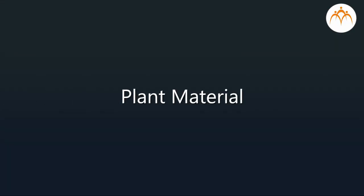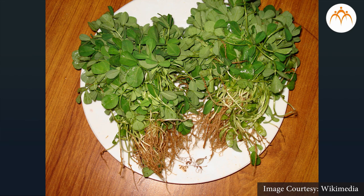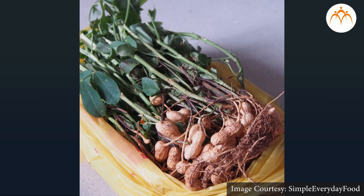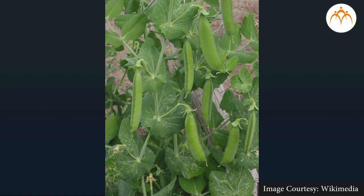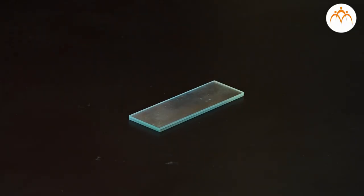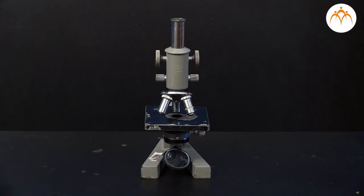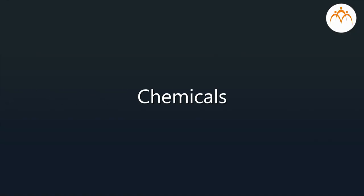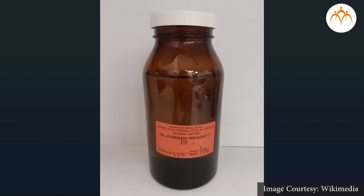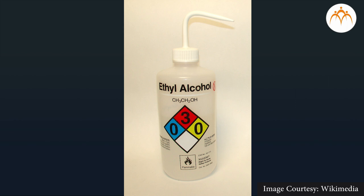AIM: Study of bacteria present in root nodules of leguminous plants. Plant materials: rooted plants of fenugreek, peanuts, beans, etc. Equipment: glass slide, cover slip, watch glass, dropper, razor blade, and a compound microscope. Chemicals: safranin, 3-5% hydrogen peroxide solution, 70% ethyl alcohol.